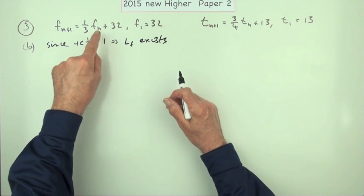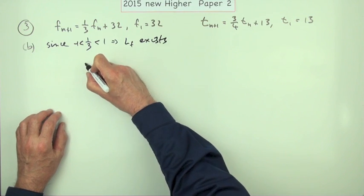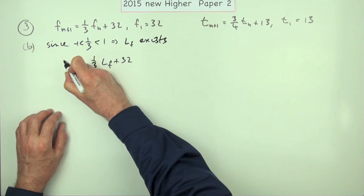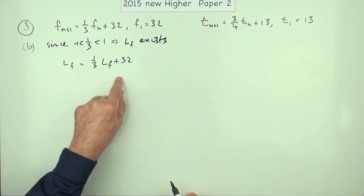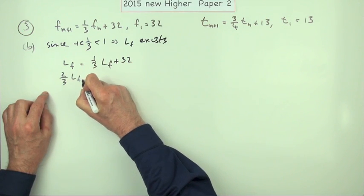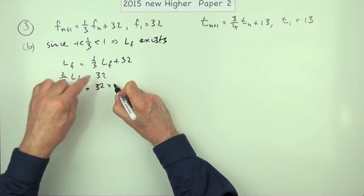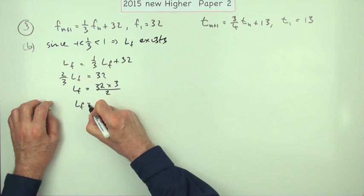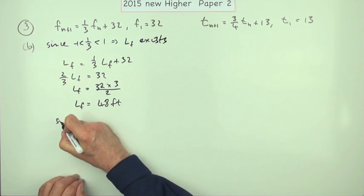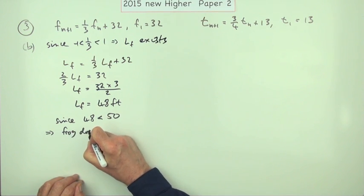There's two ways: you could either put the limit into the recurrence relation or use the formula. I'll put it into the recurrence relation here. So that means if you put that limit into this recurrence and multiply it by 1/3 and add 32 you'll come back out with the same limit. Taking that across means 1 - 1/3, that would be 2/3 of the limit equals 32. So the limit will be 32 times 3 divided by 2, so limit of the frog is 48 feet. Unfortunately. Since 48 is less than 50, the frog does not escape.